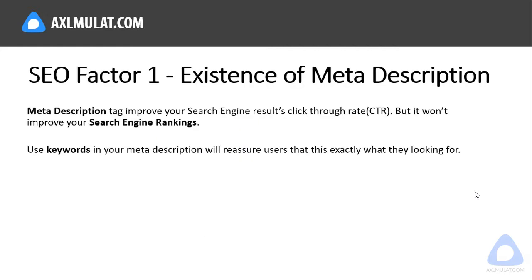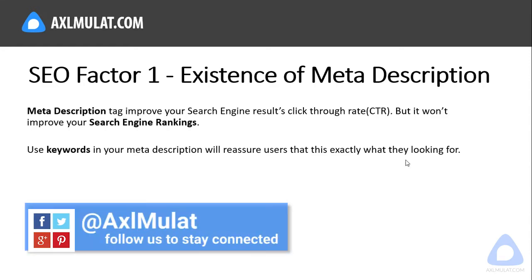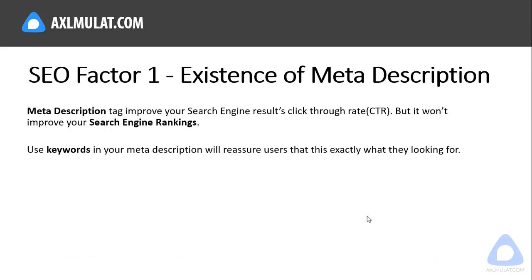Technical factor number 1: existence of a meta description. This meta description is very important because it shows up in Google search engine results. Most users read the result description before they click the content they want. Let me show you a live example of that.